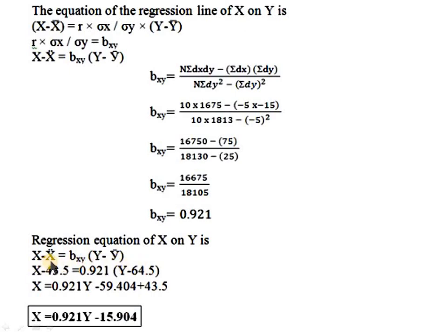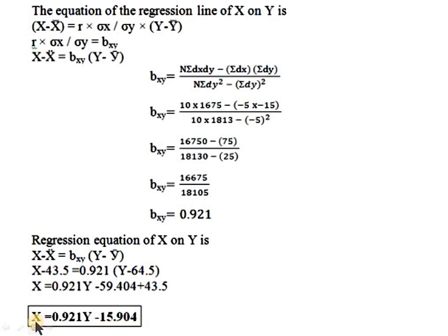The regression equation of x on y is: x − x-bar equals b_xy times (y − y-bar), so x − 43.5 equals 0.921 times (y − 64.5). Solving further: x equals 0.921y − 0.921×64.5 minus 43.5, which gives x equals 0.921y − 59.404 + 43.5, so x equals 0.921y − 15.904.